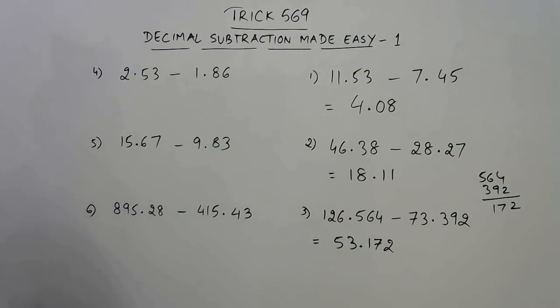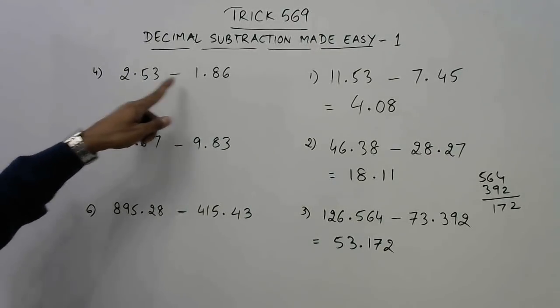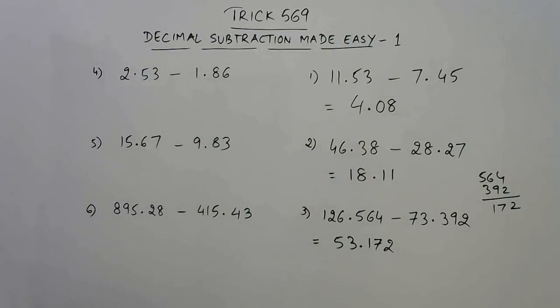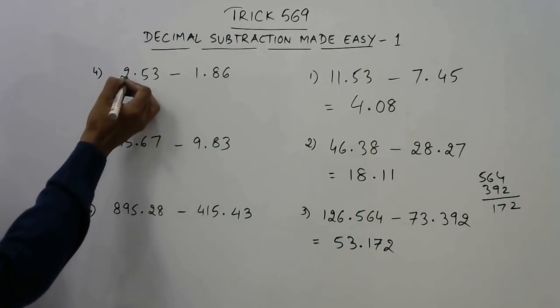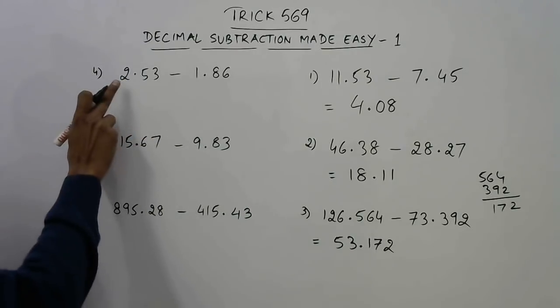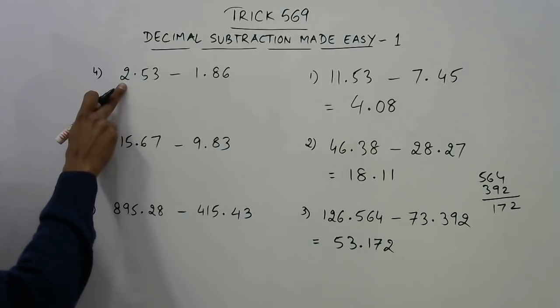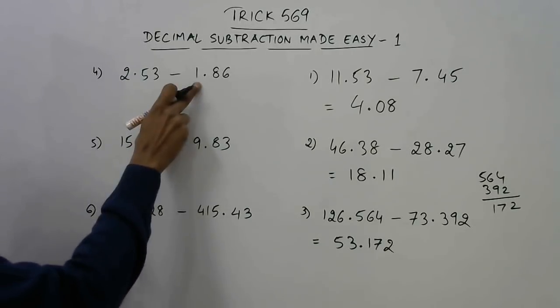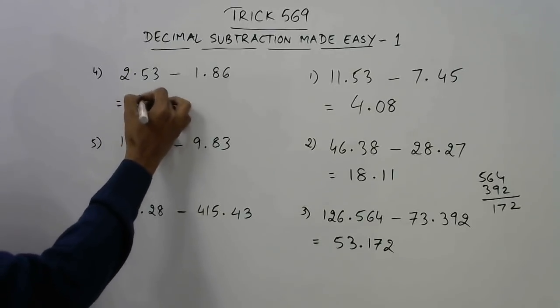Now let us change the method. Here this number is smaller and this number 86 is larger. So whenever this happens, reduce the number before the decimal place by 1. Here we have the number 2, so this becomes 1. And 1 minus 1 gives you 0, so the answer will start with 0 point.